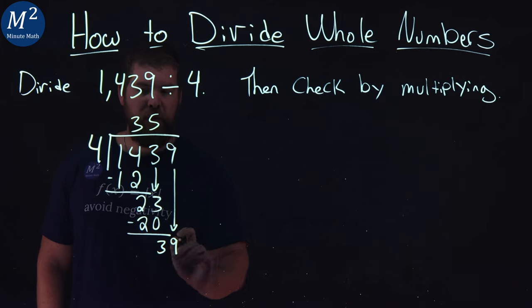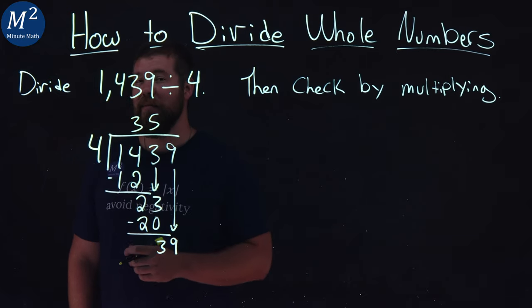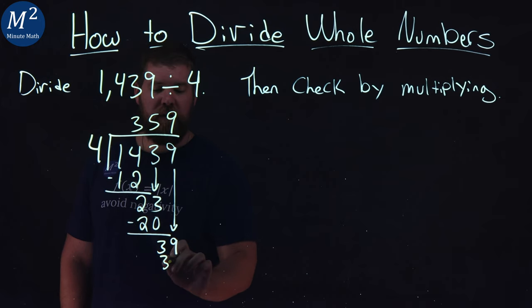Bring down the 9. Does 4 go evenly into 39? The answer is no. It goes into 36, 9 times. 9 times 4 is 36. Subtract them, and we have a 3.